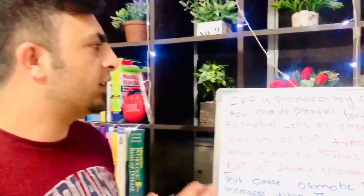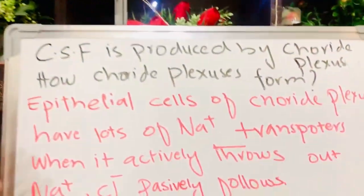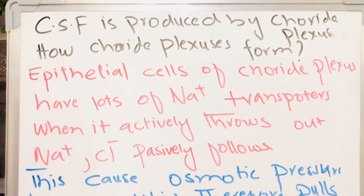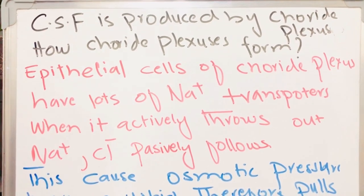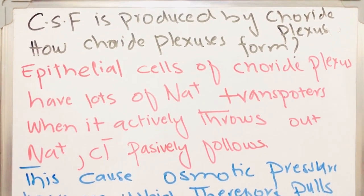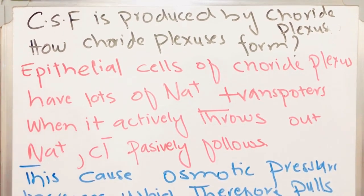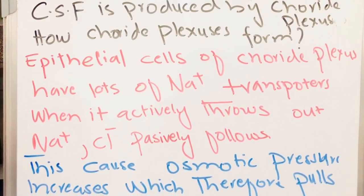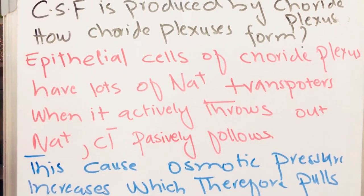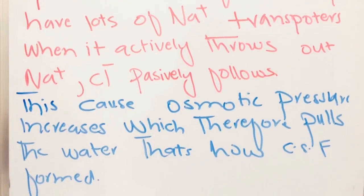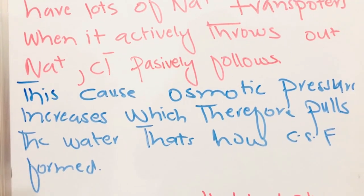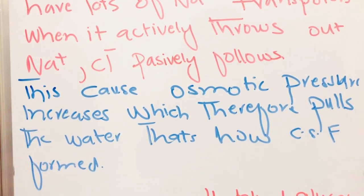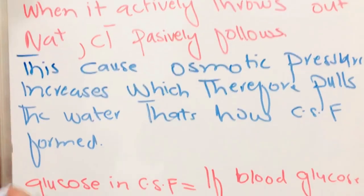CSF is produced by the choroid plexus. The epithelial cells of the choroid plexus have a lot of sodium transporters. When sodium is actively transported out, chloride passively follows. This causes osmotic pressure to increase, which pulls water, and this is how our cerebrospinal fluid forms.